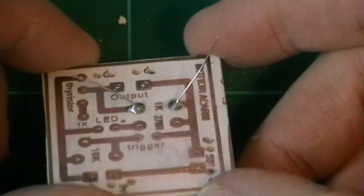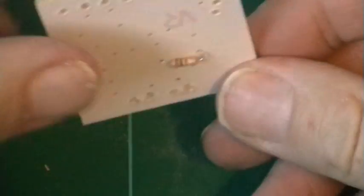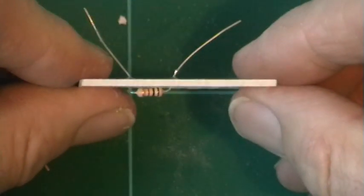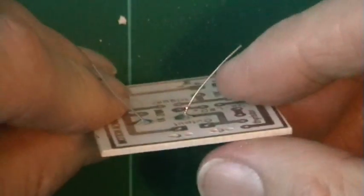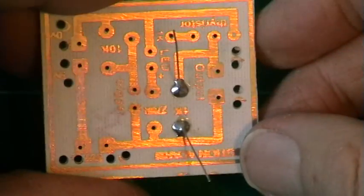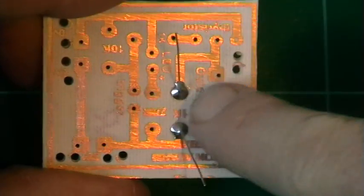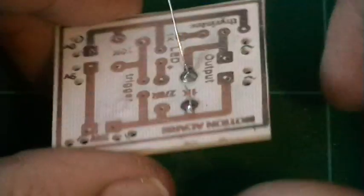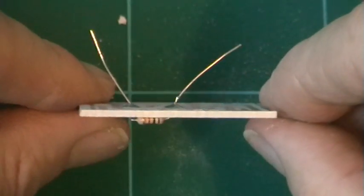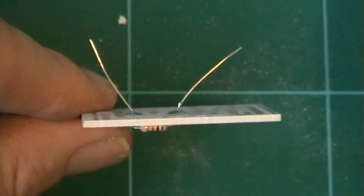And there we can see the resistor is up against the circuit board. The legs are through there and there's our solder joint. Now it's just a case of clipping off the two wires with the side cutters and finishing our joint.